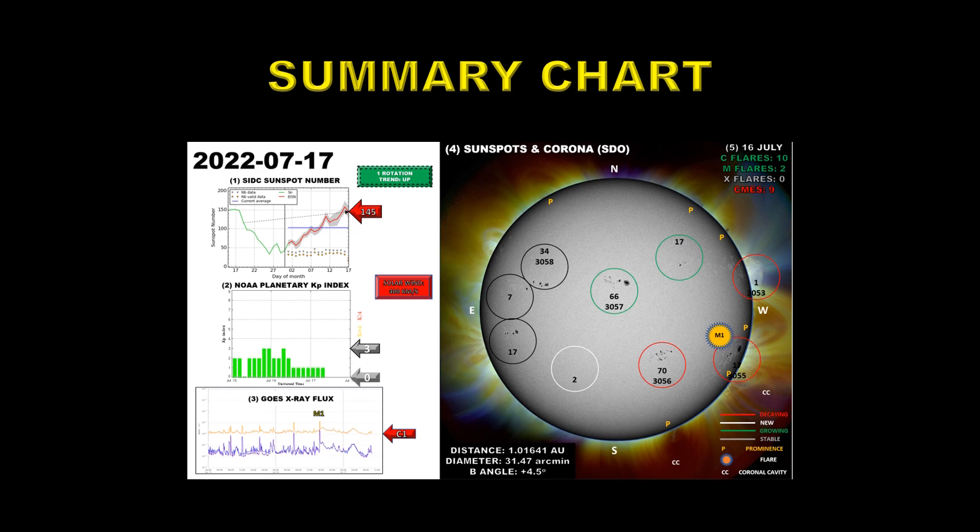That M1 flare came from the southwest limb region 3055. We have eight regions on the sun at the moment. Two are about to go over the limb so sunspot numbers will likely drop again tomorrow. There may be something coming over the northeast limb but it's not looking too promising at the moment.